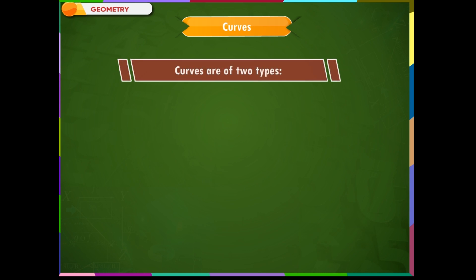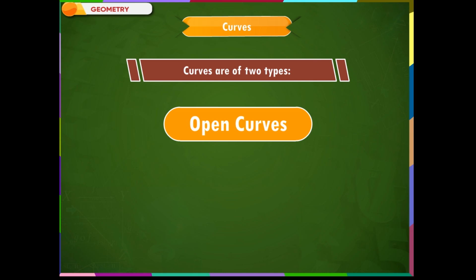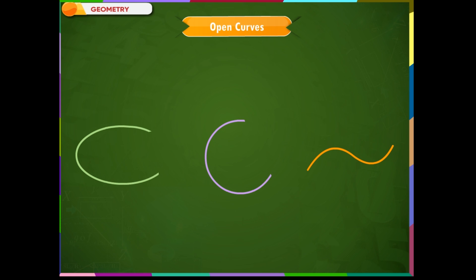Curves are of two types: open curve and closed curve. An open curve is one that is open on any one of its sides, and the starting point is different from the end point. A closed curve is one whose end points join to enclose an area, so the starting point and end point are the same.